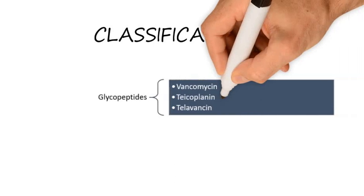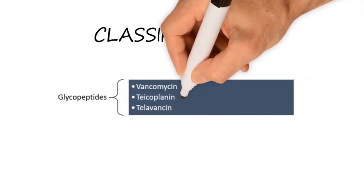You can have the classification of vancomycin. Different books have different antibiotics classes. This is the general classification of glycopeptides: vancomycin, tecoplanin, and telavancin. The prototype of this group is vancomycin.